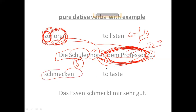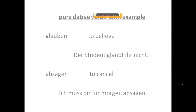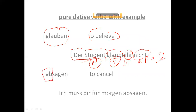Next is 'schmecken,' meaning 'to taste.' For example: 'Das Essen schmeckt mir sehr gut' — 'das Essen' is nominative, 'schmeckt' is the verb, 'mir' is dative, and 'sehr gut' is the remaining part. Then 'glauben,' meaning 'to believe': 'der Student glaubt ihr nicht' — 'der Student' is nominative, 'glaubt' is the verb, 'ihr' is the dative object, and 'nicht' is the remaining part.